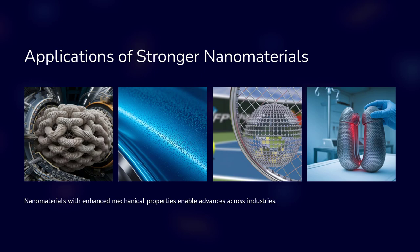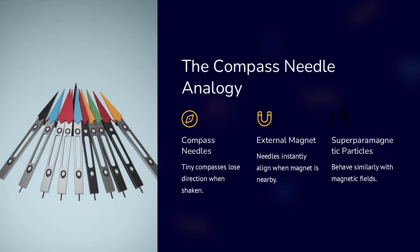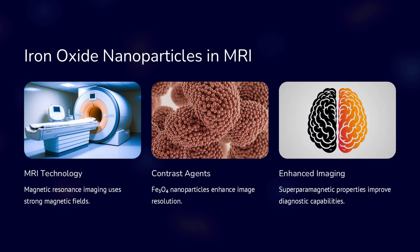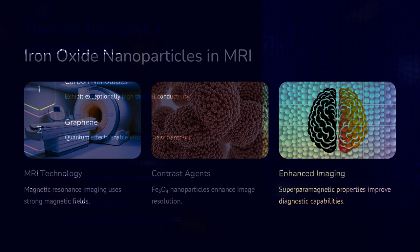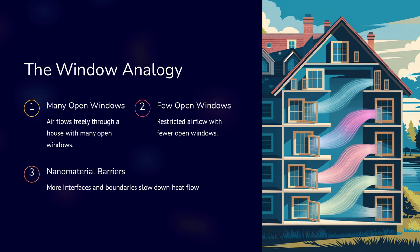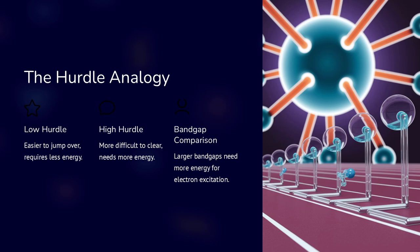In the case of gold nanoparticles, for example, the plasmon resonance, responsible for their vivid colors, changes with particle size. As the size decreases, the frequency of the collective oscillations of electrons shifts, altering the way light is absorbed and scattered. This principle is harnessed in sensors and medical diagnostics, where the optical properties of nanoparticles can be precisely tuned to detect specific molecules.